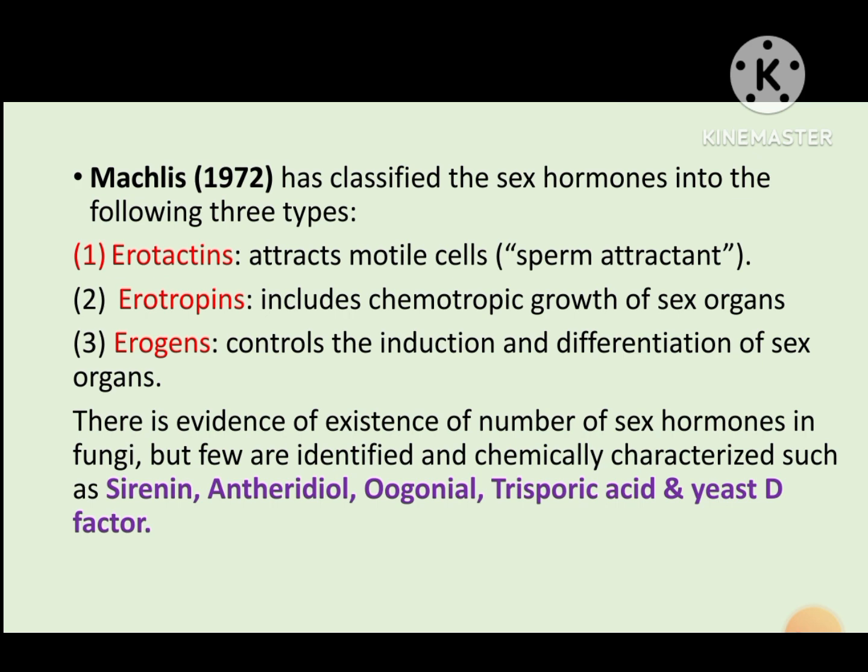Erotaxin are hormones which attract motile gametes involved in reproduction. Erotropin stimulates the sexual structures. Erogen controls the initiation and differentiation of sexual structures. So, erotaxin involves motility, erotropin involves stimulation, whereas erogen involves the development of sexual structures.